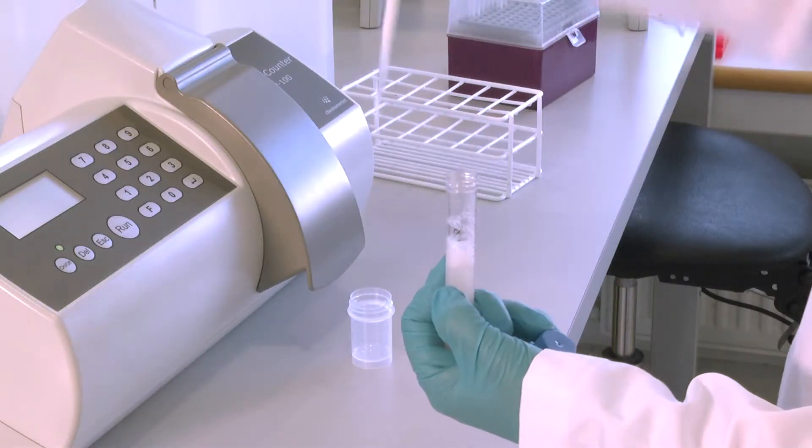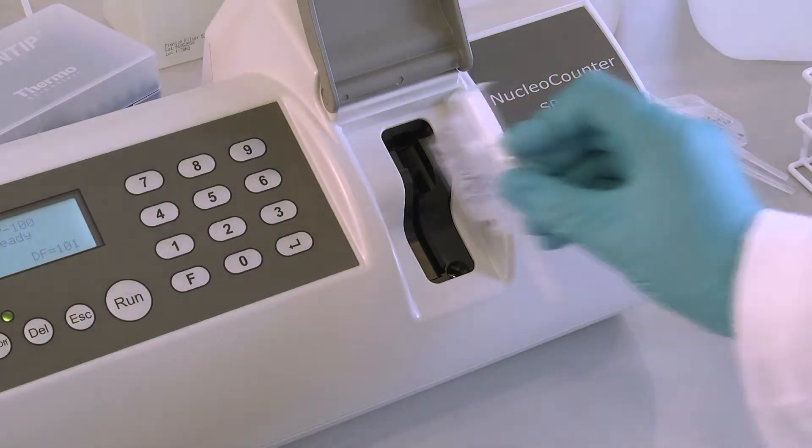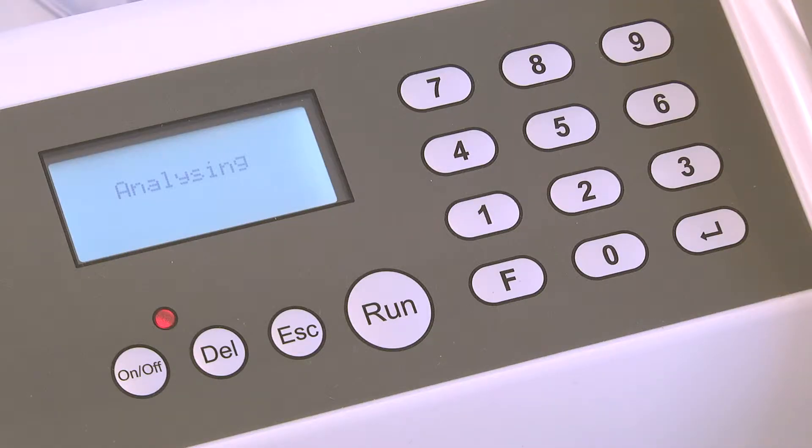Simply take a small sample of semen, dilute with the supplied reagent, load the cassette, insert and press run. In 30 seconds the instrument shows the total cell count in the display.